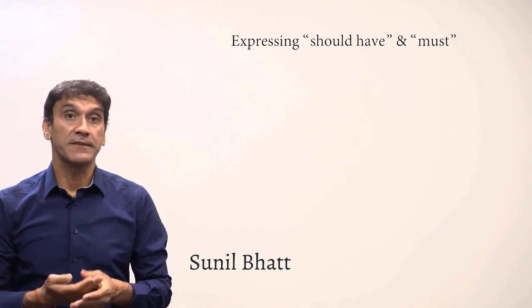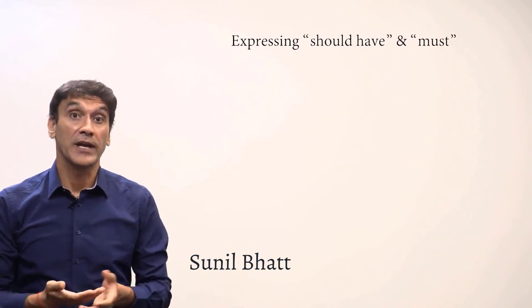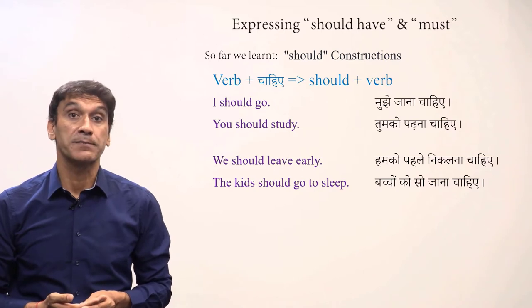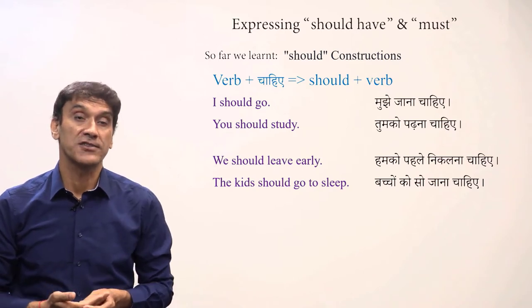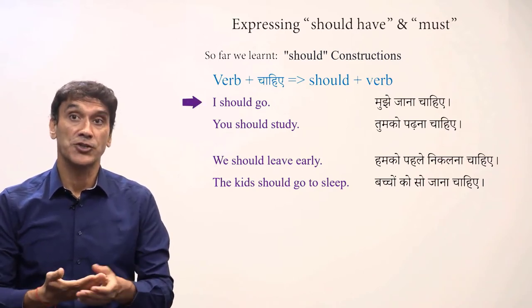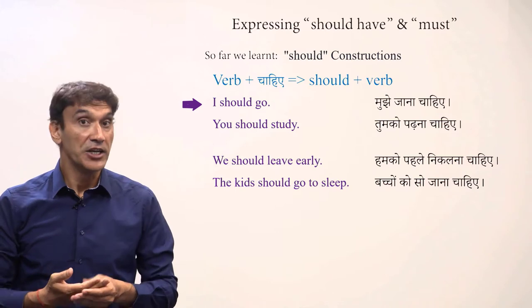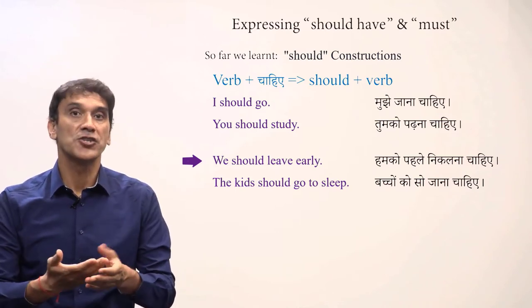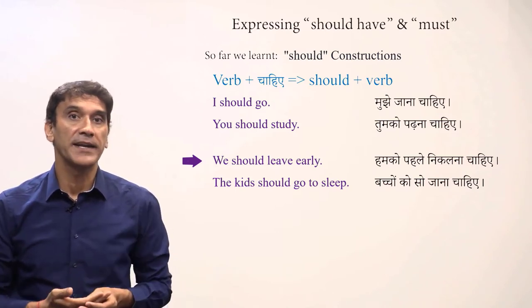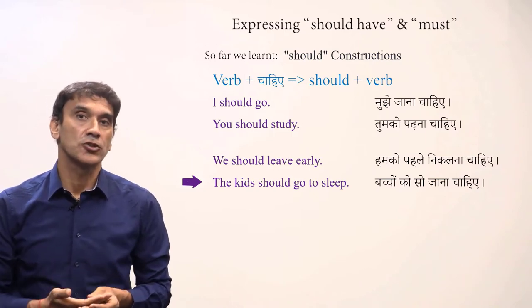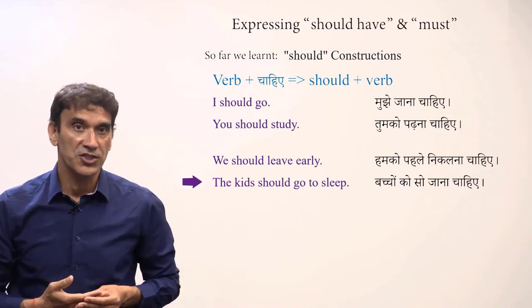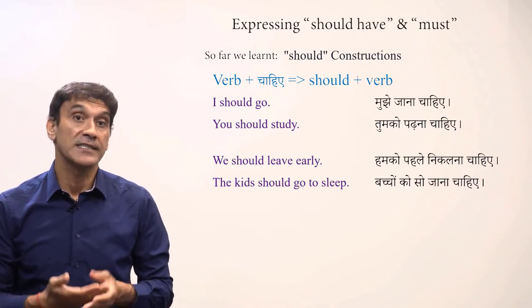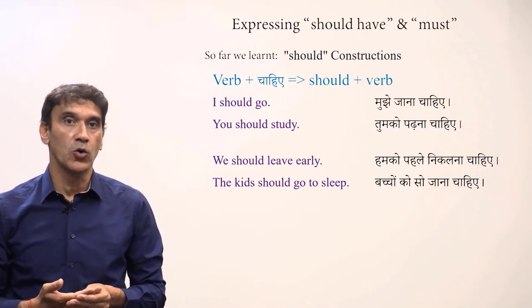The next grammar point is expressing 'should have' and 'must' in Hindi. In previous grammar points we learned how to express the English construction with 'should', such as: I should go — mujhe jana chahiye; you should study — tumko padhana chahiye; we should leave early — humko pahle nikalna chahiye; the kids should go to sleep — bachon ko so jana chahiye. Keep in mind that with chahiye, the subject always takes the postposition ko.